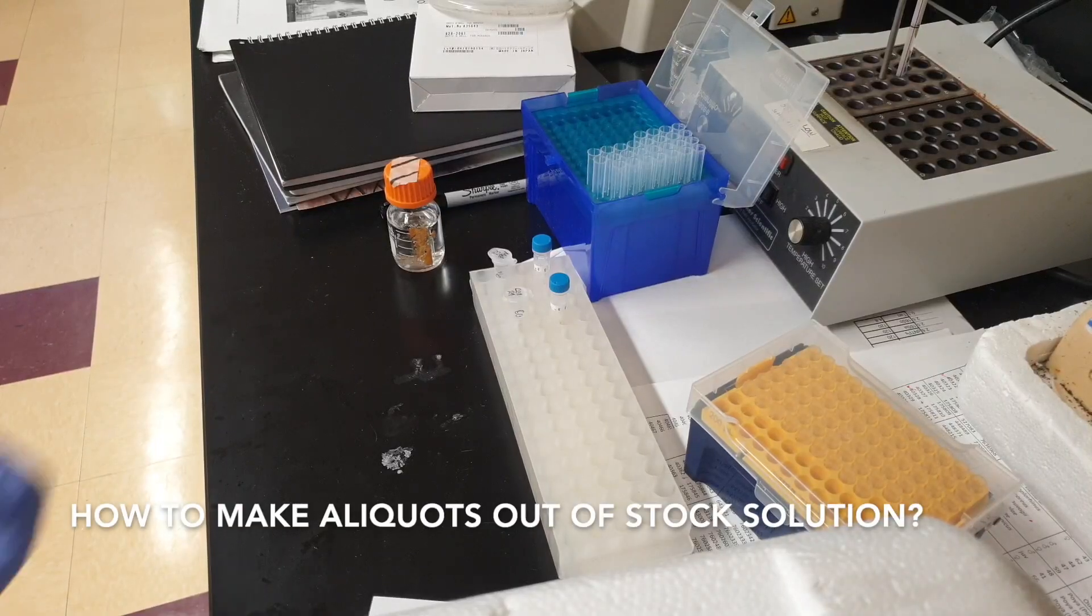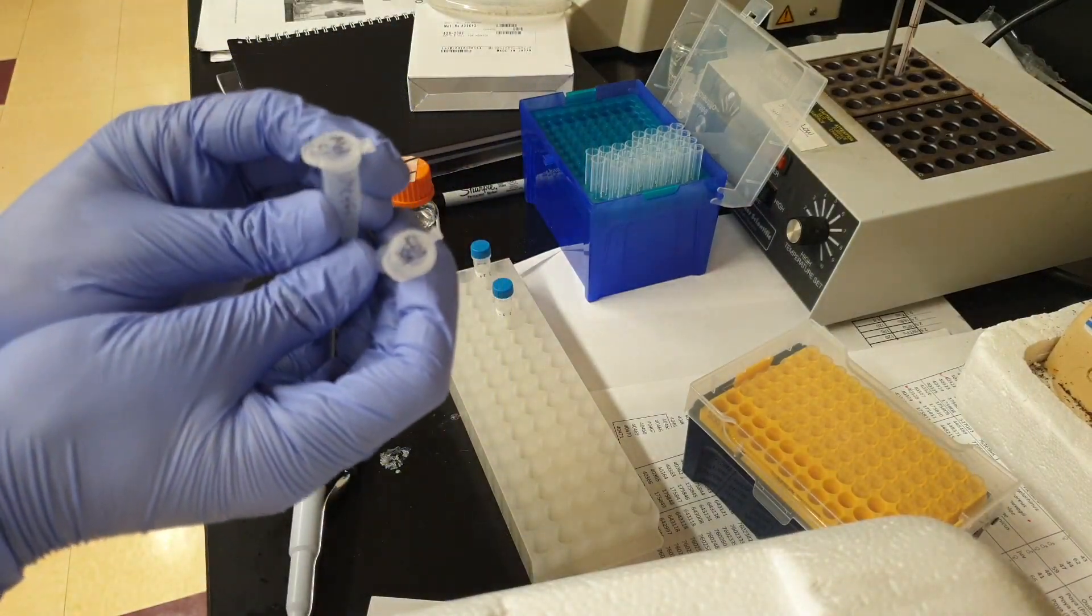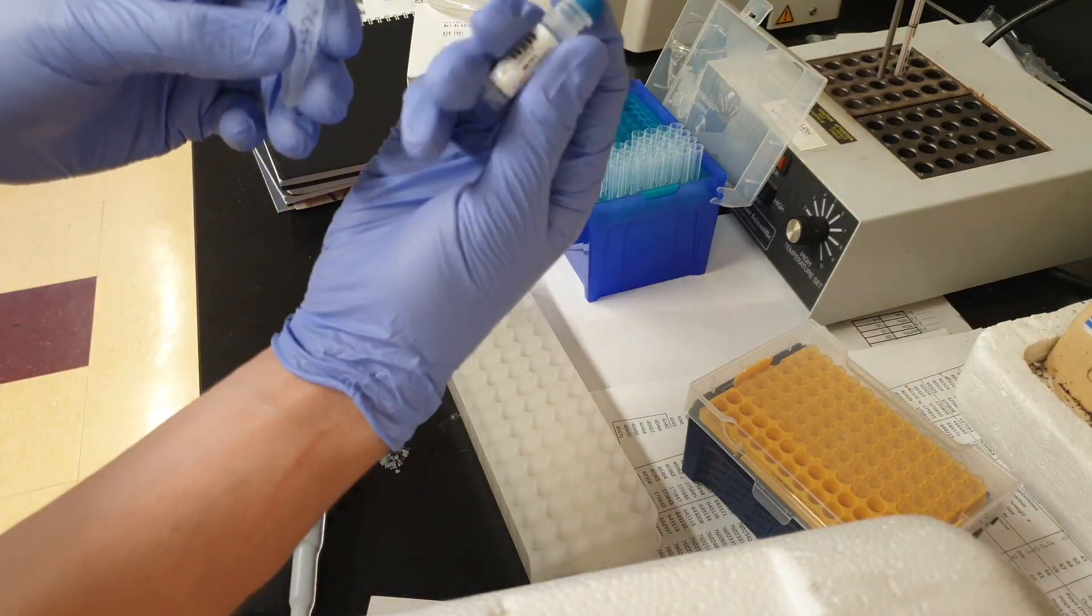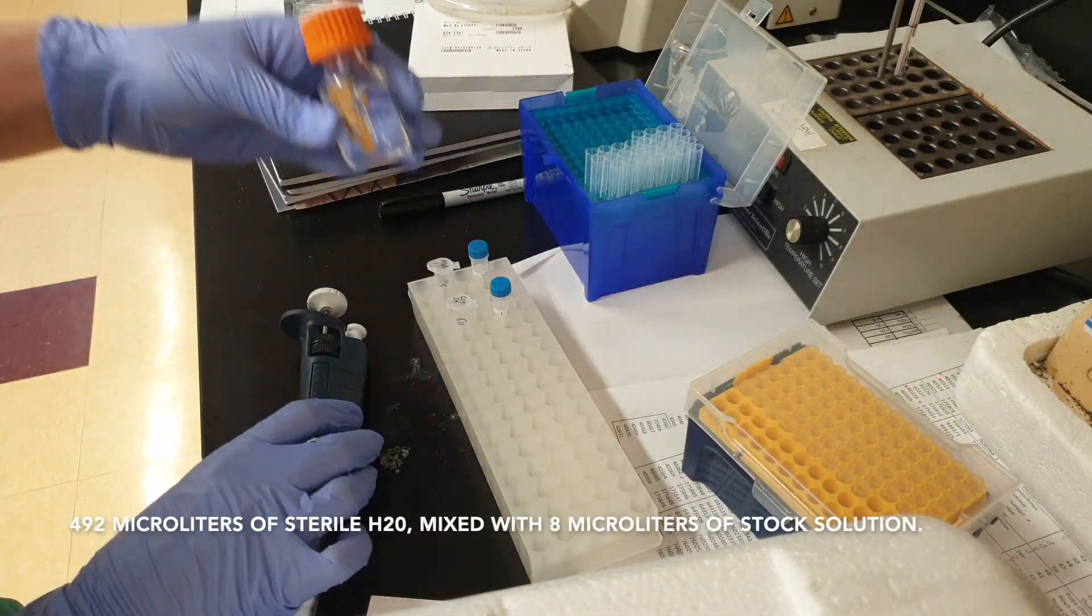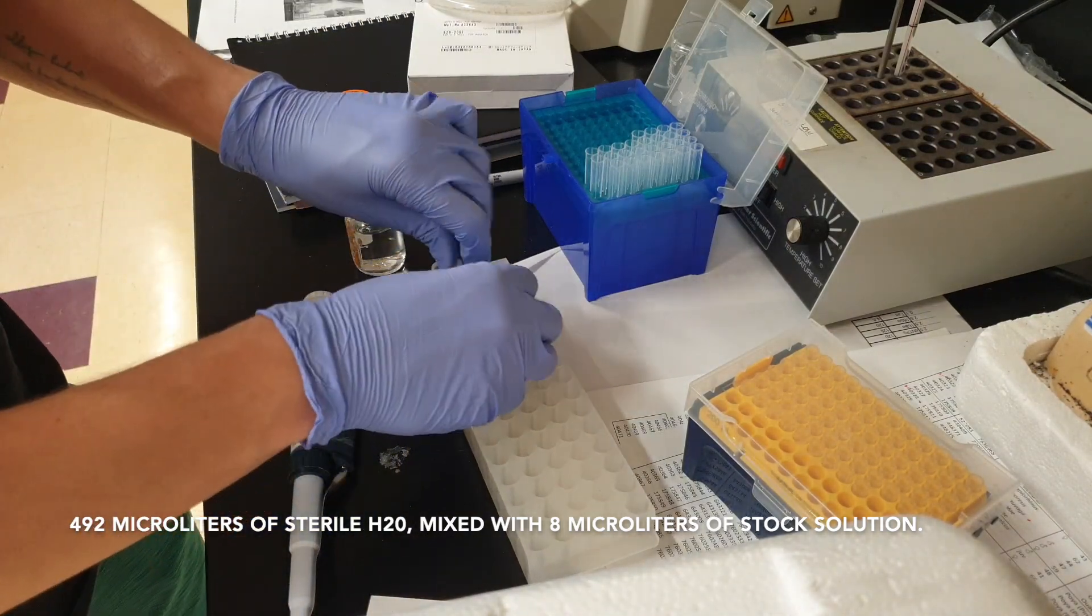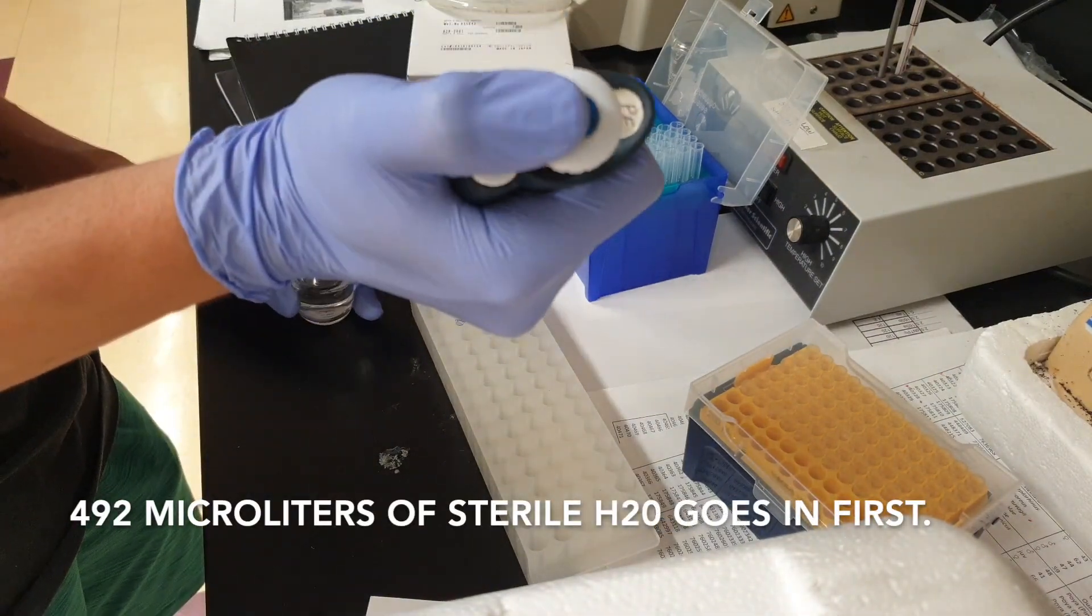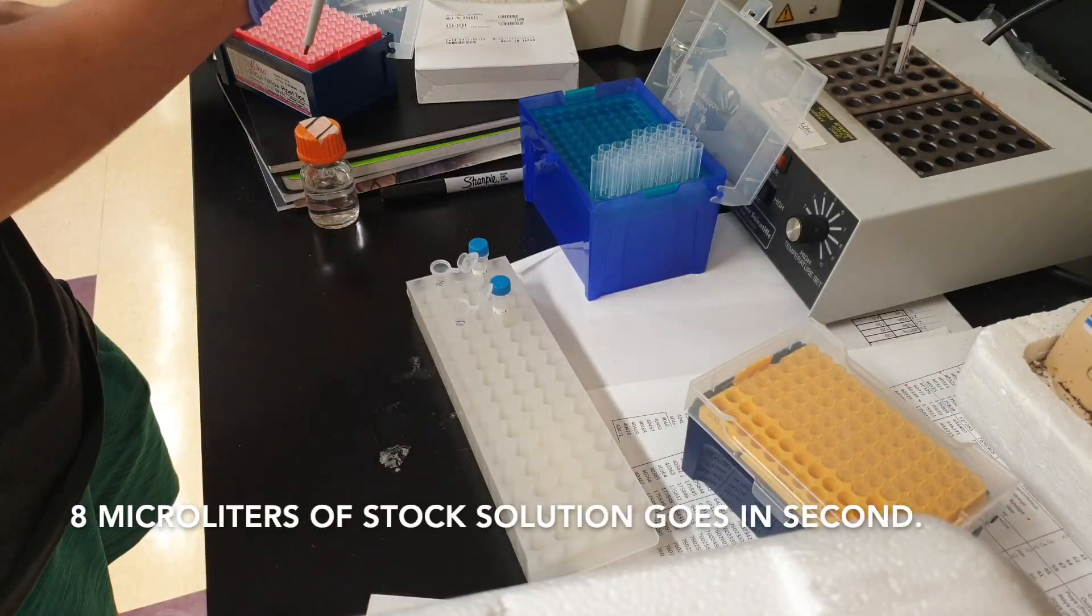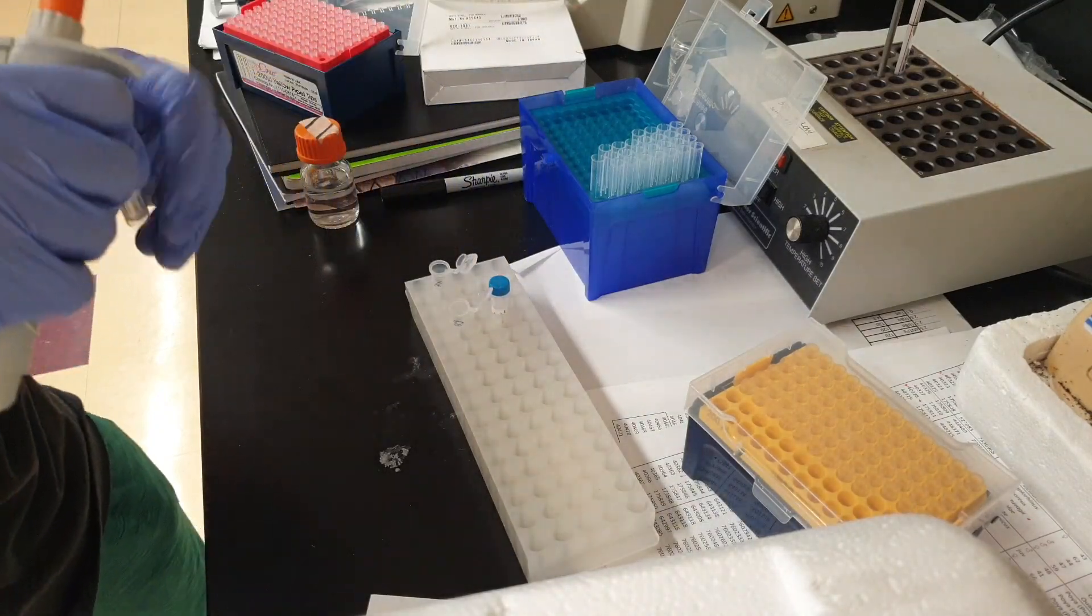So we took them out. We have tubes labeled, these are going to be our aliquot tubes, so matte f1 labeled as matte f1 as well. What we're gonna do is put 492 microliters of sterile water into those aliquot tubes. Once you do that, get eight microliters of stock solution and put it into the aliquot.